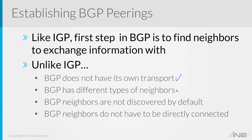BGP has different types of neighbors — you have internal and you have external. Each one has its own administrative distance specific to the type of peering. EBGP is an AD of 20, and IBGP is an AD of 200. AD meaning administrative distance, and the lower the value, the better — more preferred that particular path is.